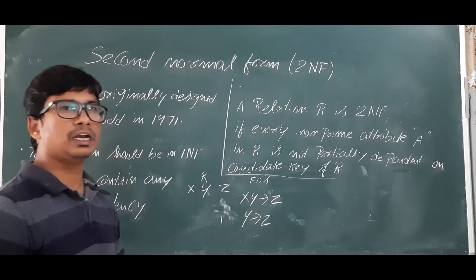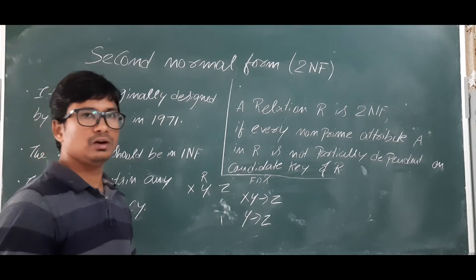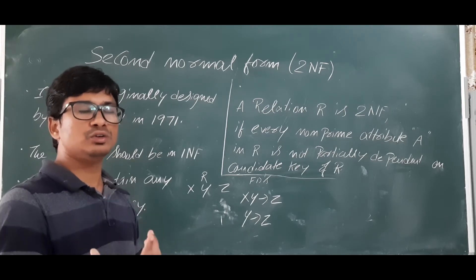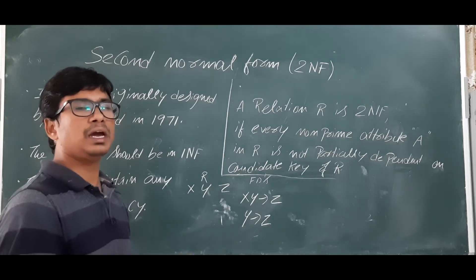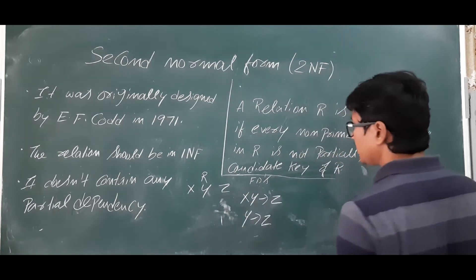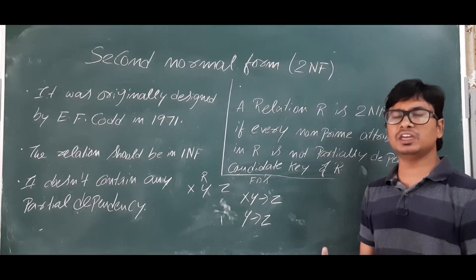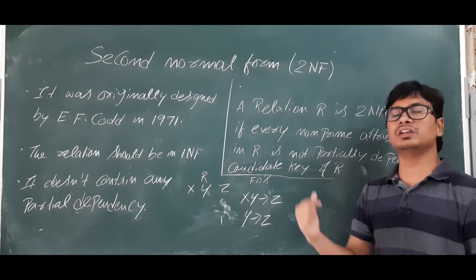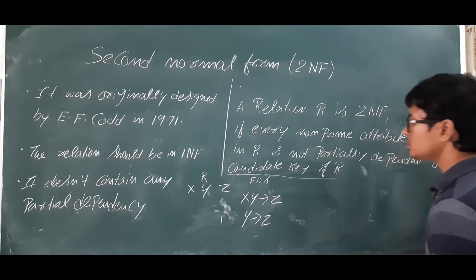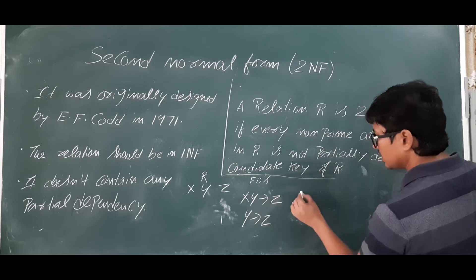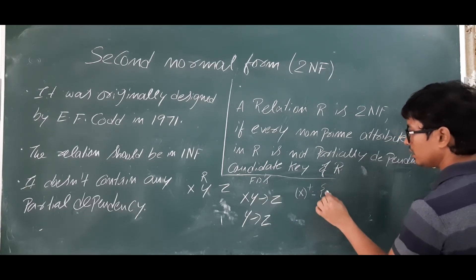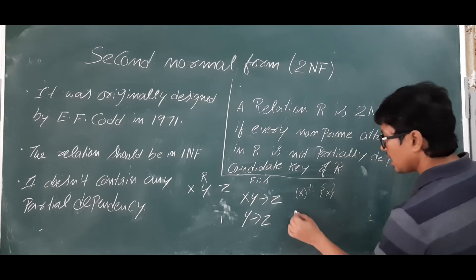To identify prime and non-prime attributes, I first need to identify the candidate key for the relation. I have discussed how to identify a candidate key in earlier videos — please go through those first. The candidate key is the minimal set of attributes which can uniquely identify a tuple in the relation. Using closure, I will check: X-closure gives only X, so X cannot be a candidate key. Y-closure gives Y and Z, but not X, so Y is also not a candidate key.